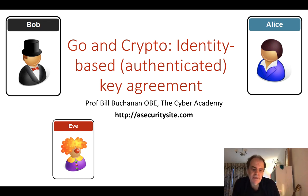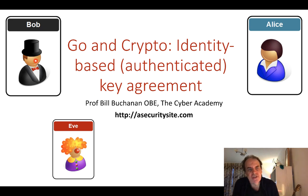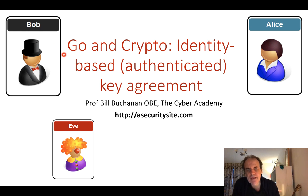Let's look at identity-based encryption and how we could use that to generate a shared key or shared secret between Bob and Alice so that Eve can't determine what that shared secret is. We'll use the Golang library to implement the key arrangement.